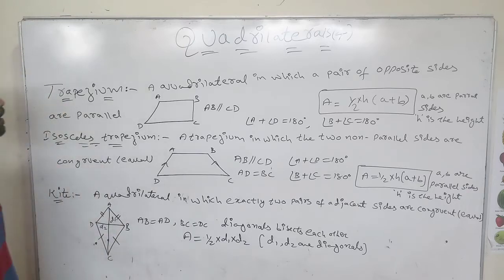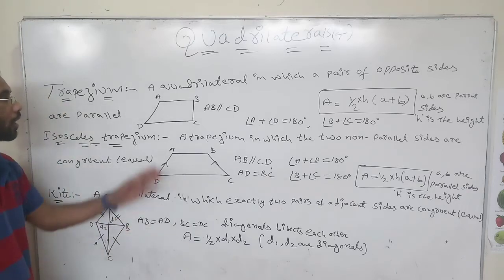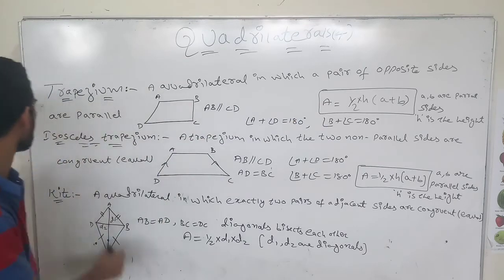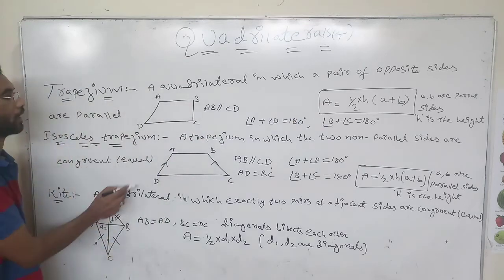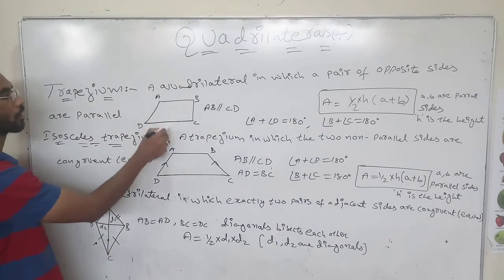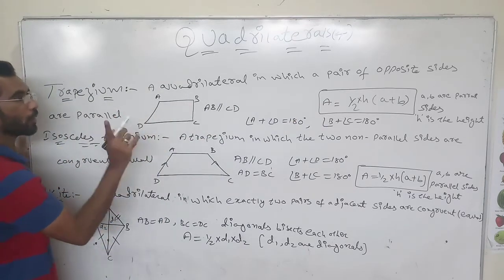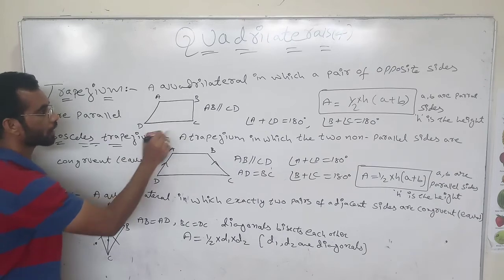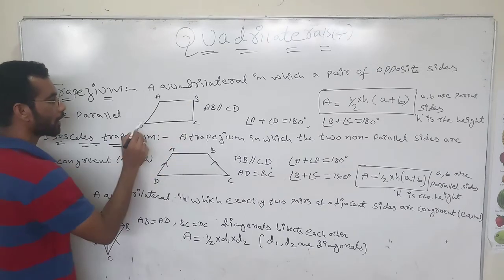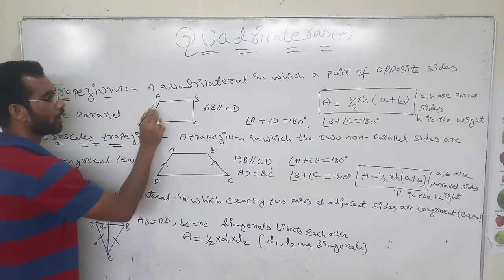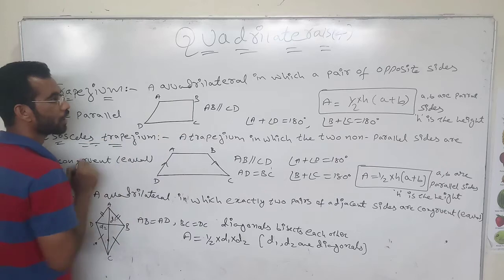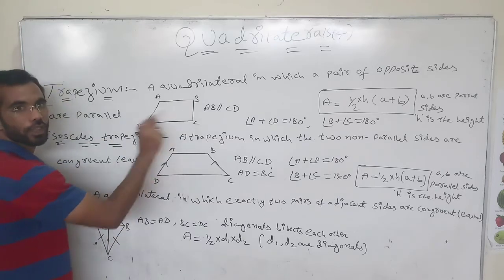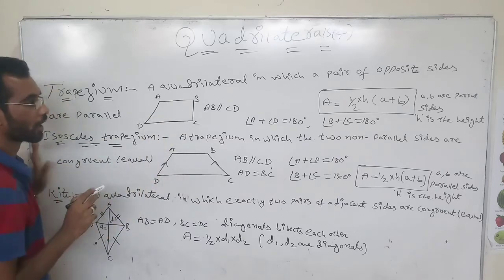Now we will see what is a trapezium. A quadrilateral in which one pair of opposite sides are parallel — that is, AB parallel to DC — and the other two sides are non-parallel.